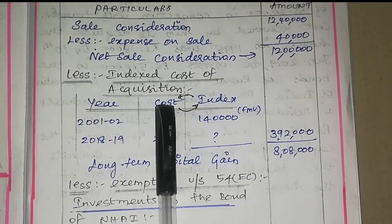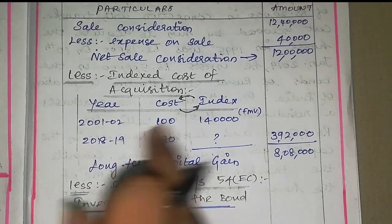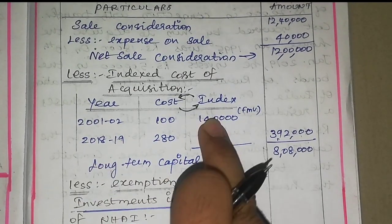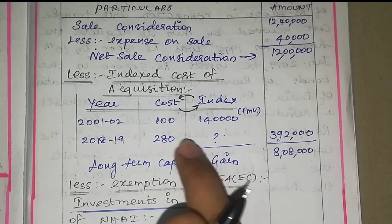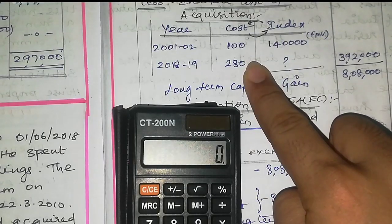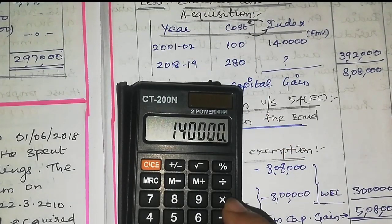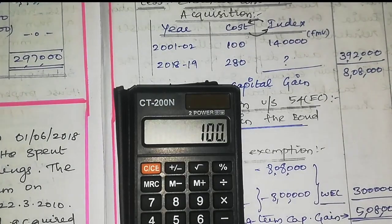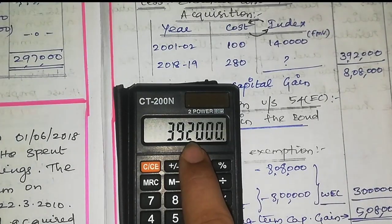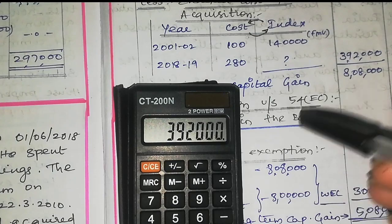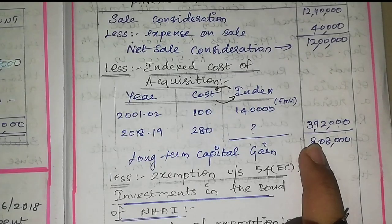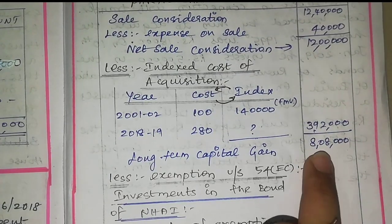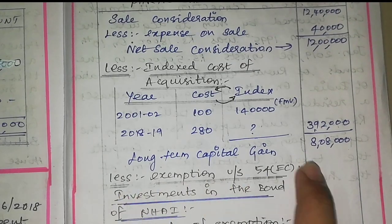We calculate the indexed cost. The cost inflation index for 2001-02 is 100 and for 2018-19 it is 280. So the indexed cost of acquisition is Rs. 1,40,000 into 280 divided by 100, which gives Rs. 3,92,000. Sale consideration less indexed cost of acquisition gives us Rs. 8,08,000 as long term capital gain.